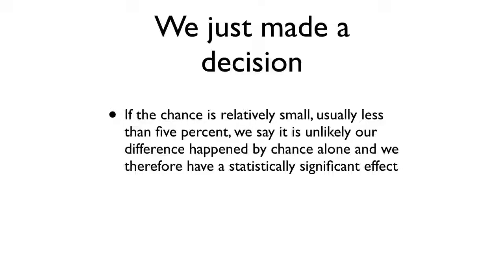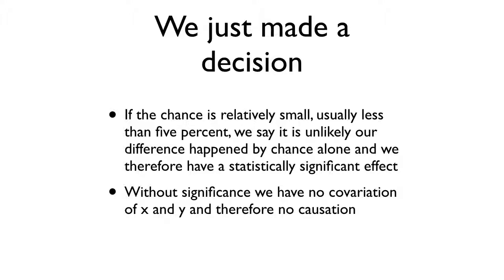So if the chance is relatively small and we've arbitrarily picked a number, 5%, then we see it's unlikely that it happened by chance alone and therefore we have what we call a statistically significant effect. Without statistical significance, we can't say that we have covariation of X and Y. So we haven't met the third criteria for saying we have a causal relationship, so we either cry or we redo the experiment or we abandon our idea. Usually we just realize, oh, we did something wrong, let's try this again.